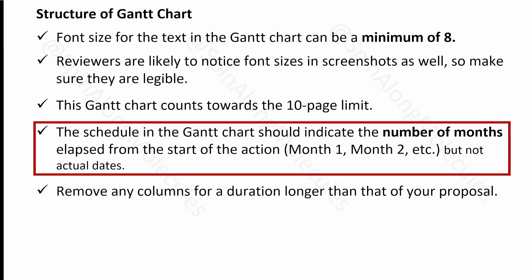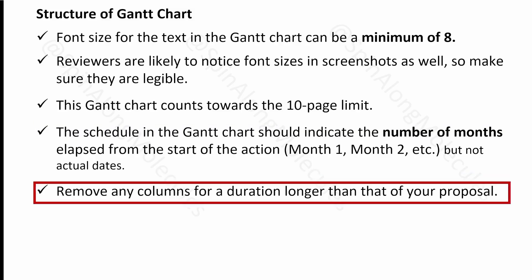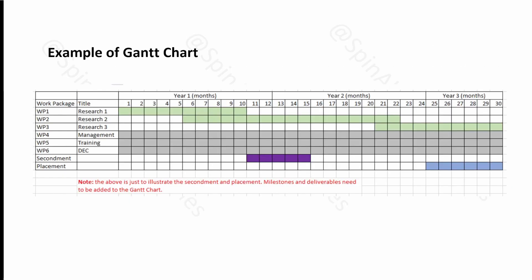The schedule of the Gantt chart should indicate the number of months from the start, like Month 1, Month 2, or M1, M2 — don't write actual dates. Also, remove columns for any duration longer than your proposal. For example, if your proposal is for two years, don't include anything beyond that. If you're on a Global Fellowship spending three years, then include three years.